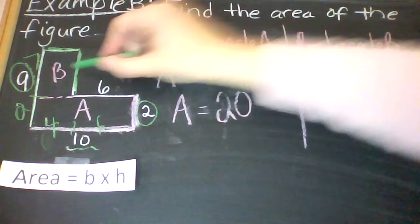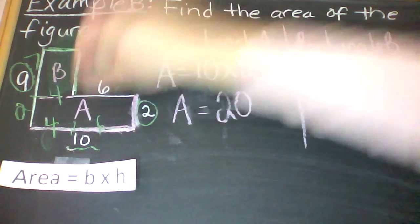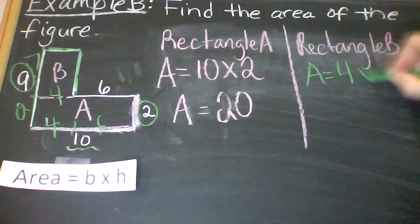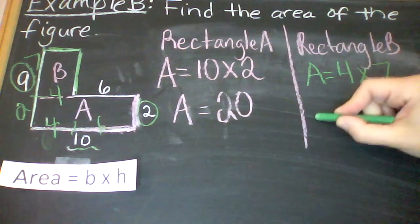So for this smaller rectangle, rectangle B, I'm going to use 4 times 7. So the area is 4 times 7. 4 times 7 is 28.